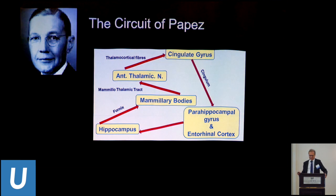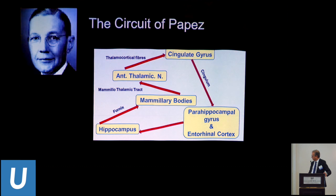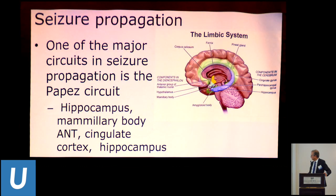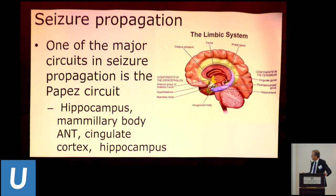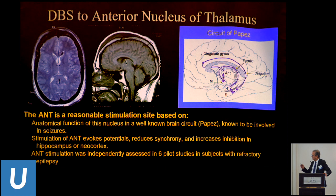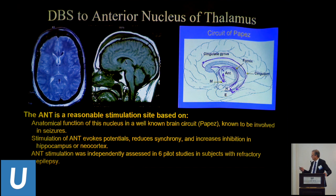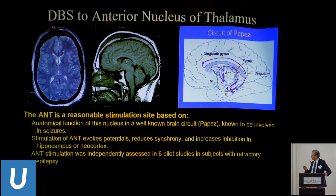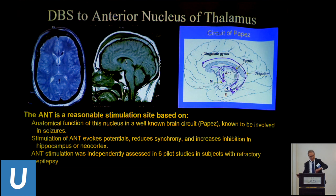An example of a network is the circuit of Papez, where we can see various stations involved—the cingulate gyrus may be involved, the hippocampus of course, and other sites along this network. DBS is a method of directly targeting this anatomical network and somehow modulating it—though not completely, because the results are usually not seizure-free. But we can modulate the network, and there is a question whether chronic modulation produces long-term positive effects.